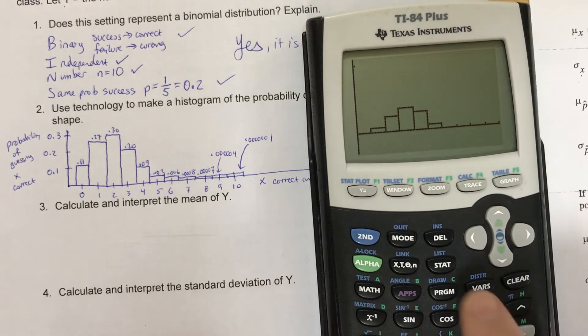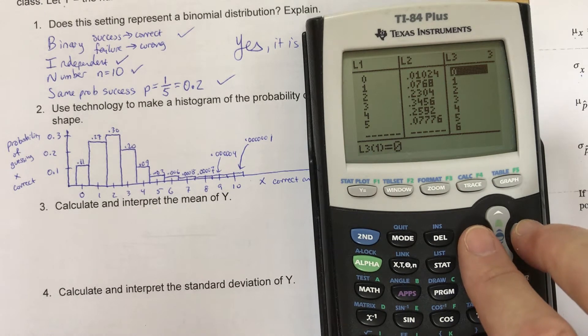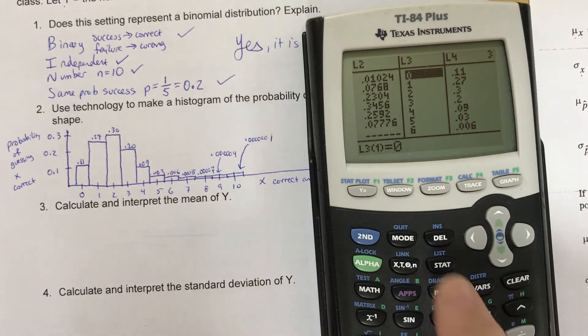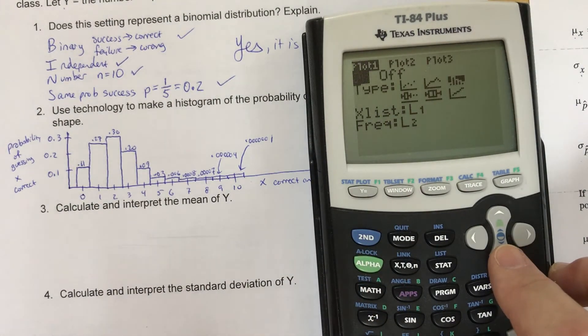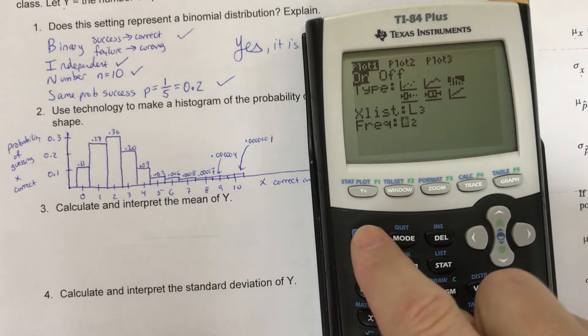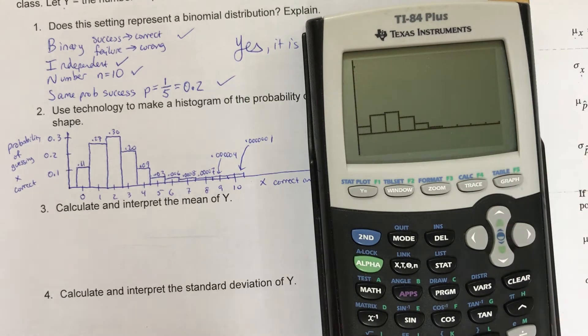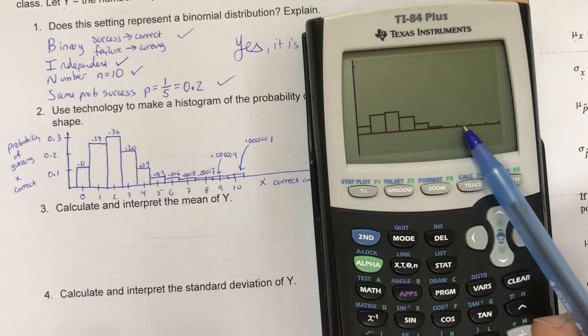The graph looks something like this. Now to get to that, I had to go stat, edit, and in this case, I want to use L3 and L4. Let me go back to stat plot. I was using the wrong thing. So list three and list four is where I typed that answer graph. Okay, so that looks better.